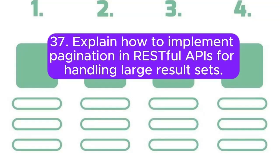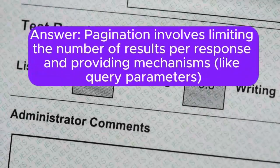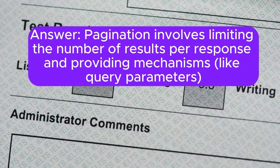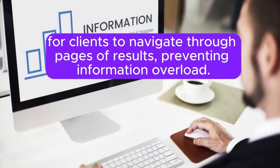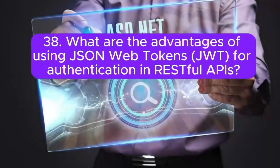Question 37: Explain how to implement pagination in RESTful APIs for handling large result sets. Pagination involves limiting the number of results per response and providing mechanisms like query parameters for clients to navigate through pages of results, preventing information overload.